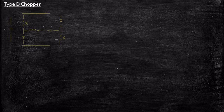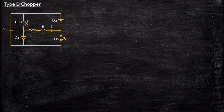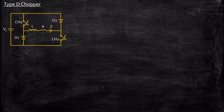Hello everyone. In this video we will be taking a look at Type D chopper. This is the circuit diagram of a Type D chopper. We are considering an RLE load, basically a representation of a DC motor, which will have some amount of armature resistance, armature inductance, and back EMF. The load is connected between these two points, and we are using two switches and two diodes, similar to Type C chopper. The number of components is the same in both cases, but the arrangement to achieve our requirement is slightly different.